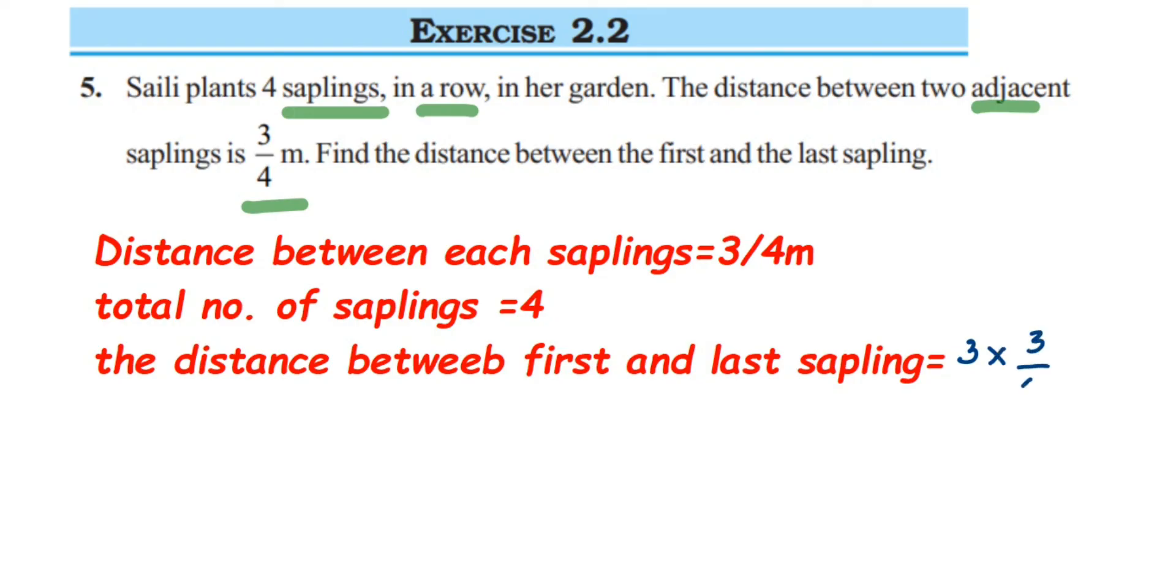This will be equal to 3 into 3 by 4. Now, we cannot cancel a number, so just multiply them. 3 into 3 is 9, so 9 by 4. Now, we are going to convert this into mixed fraction. We have 4 in the denominator. So 4 2's are 8. 8 plus 1 is 9. So 2 1 by 4 meter is the answer. That much distance is there between the first sapling to the last sapling.